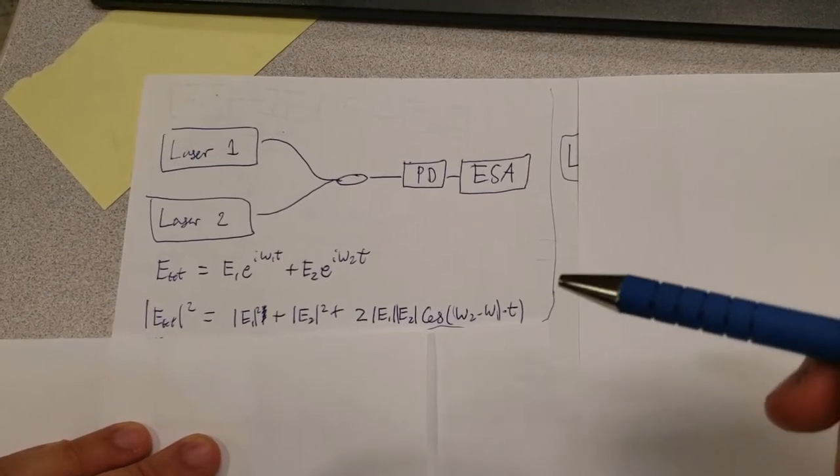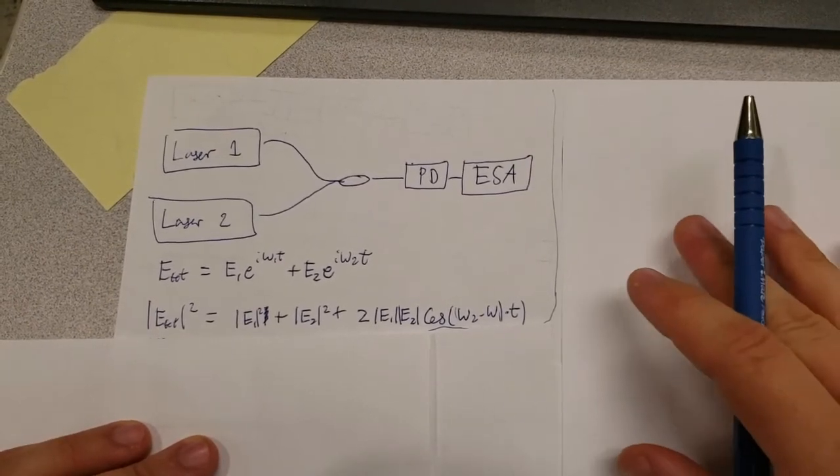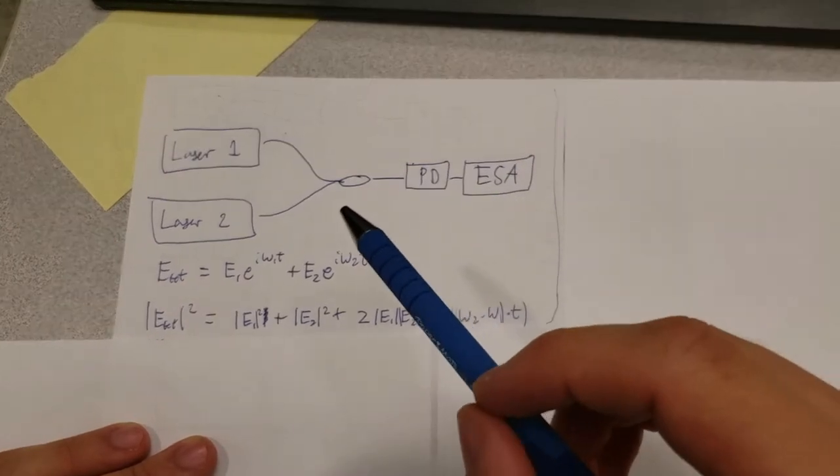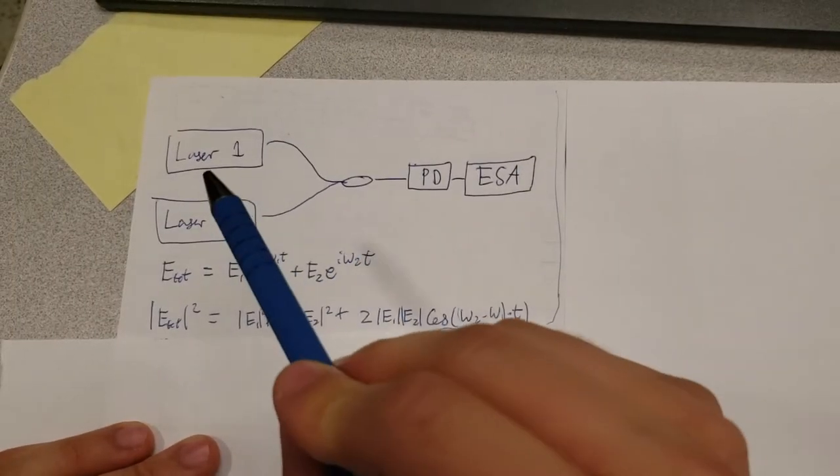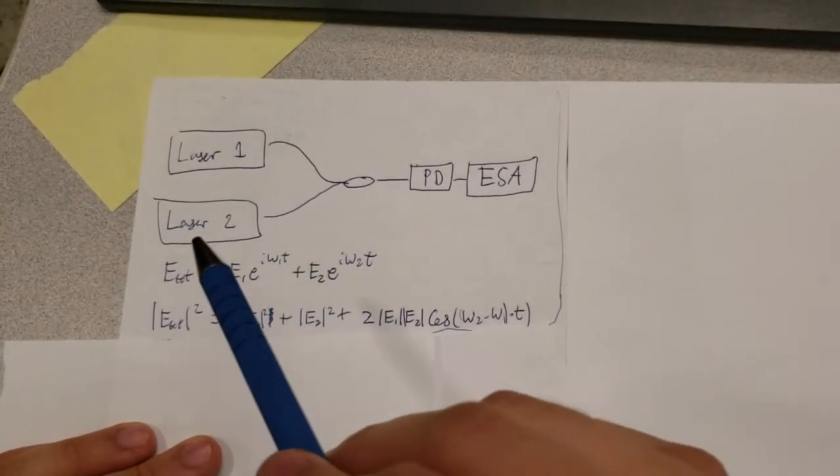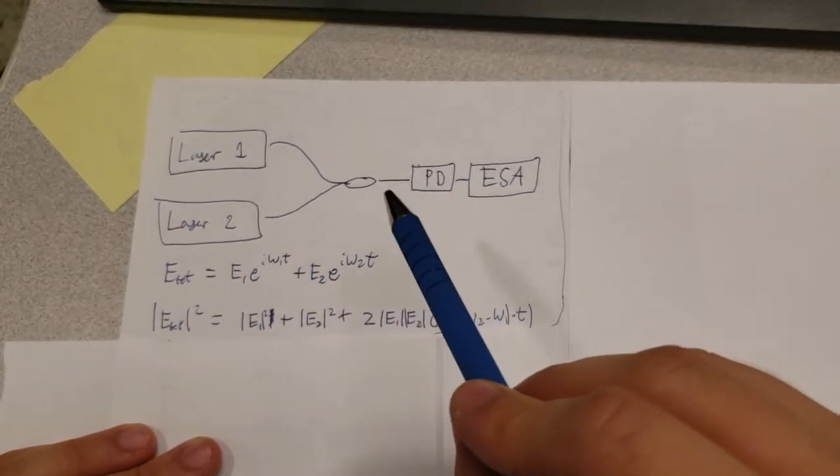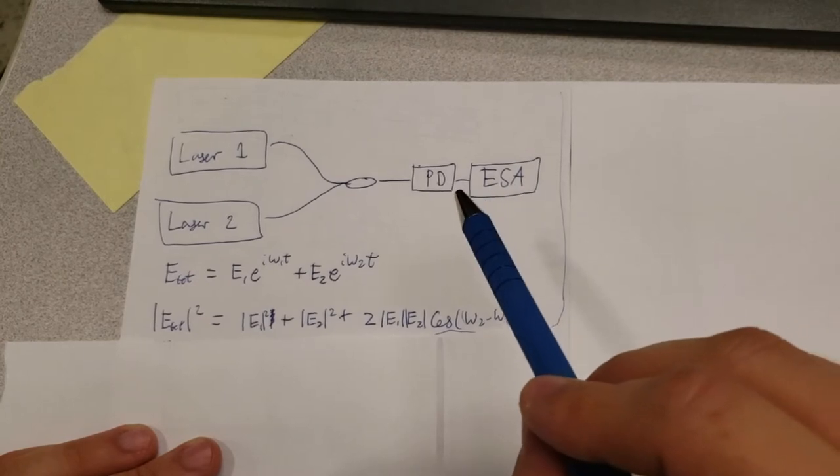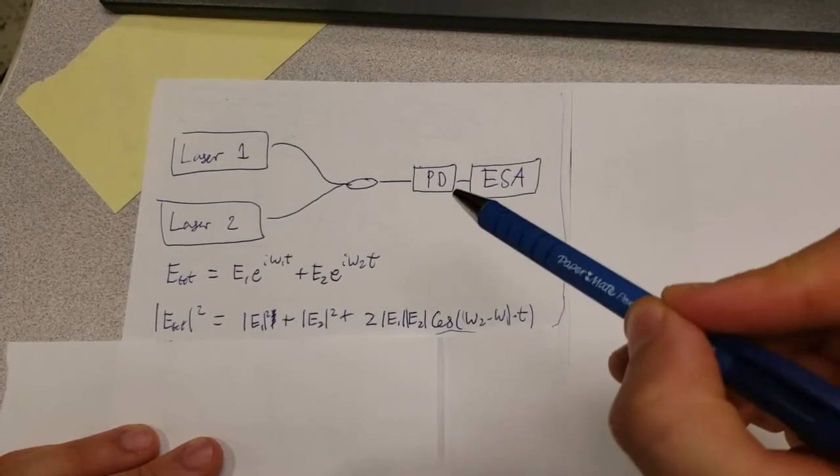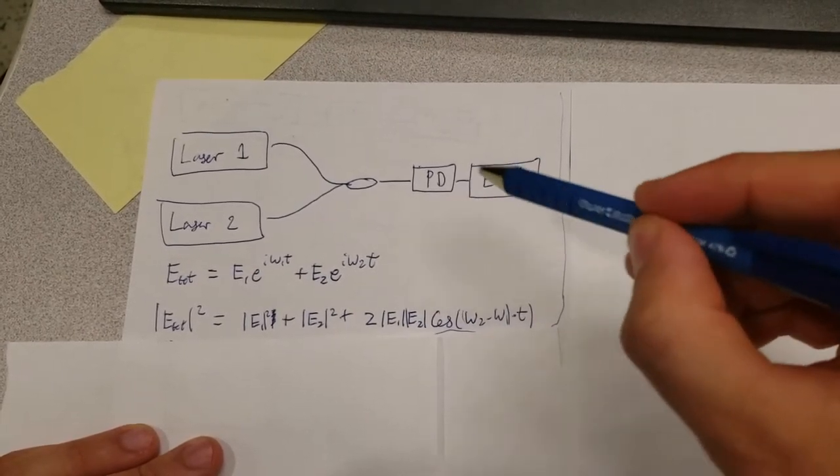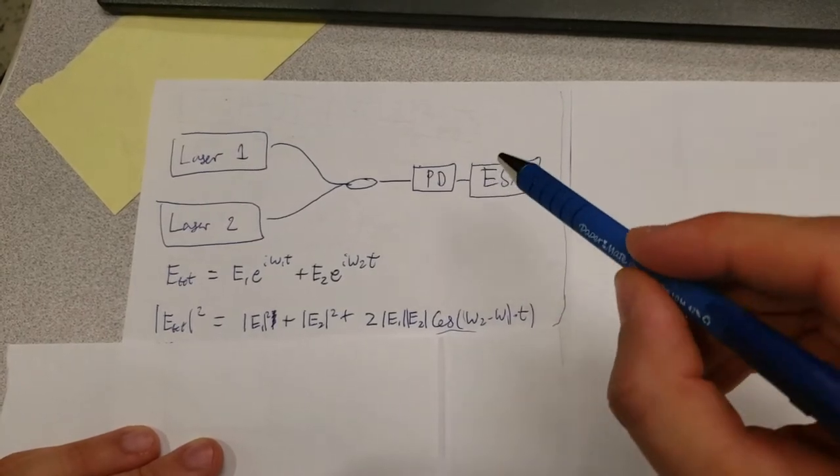Hello and welcome to another video on basic fiber optics. In one of the previous videos we had a setup where we had one laser and another laser being joined together in a coupler and then hitting a photodiode which was then connected to an oscilloscope that measured the spectrum of the incoming electrical signal.